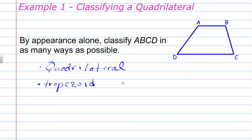We also discussed the idea of an isosceles trapezoid in which the non-parallel sides are congruent. If we look at side AD and side BC, they do not appear to be congruent. Therefore, this is not an isosceles trapezoid — it is just a regular trapezoid. So in example one, by appearance alone, we can classify polygon ABCD as a quadrilateral and as a trapezoid. You need to be aware of the definitions of these special types of quadrilaterals.